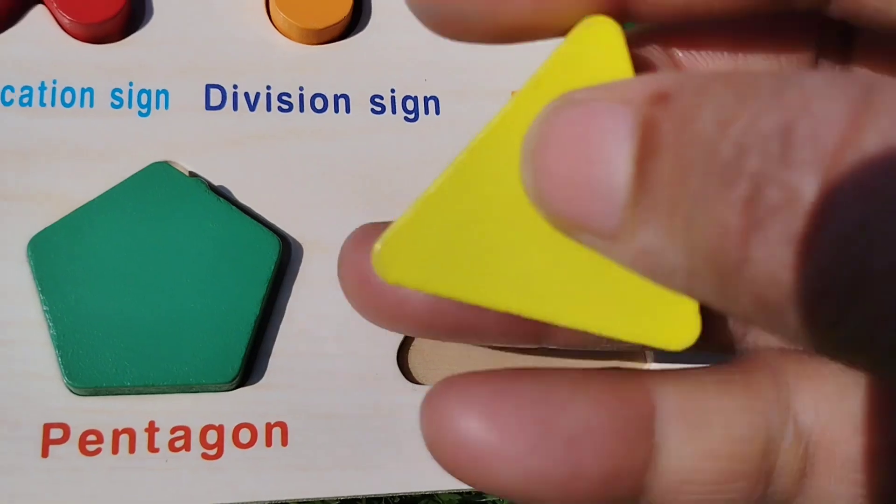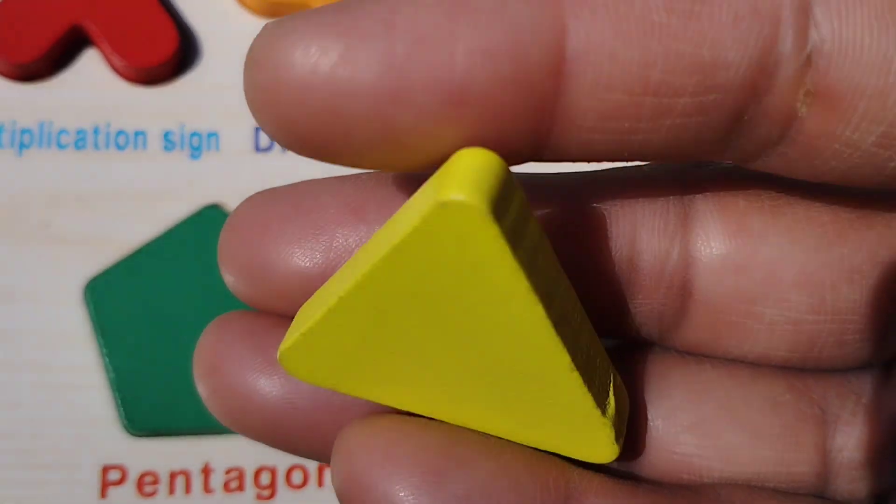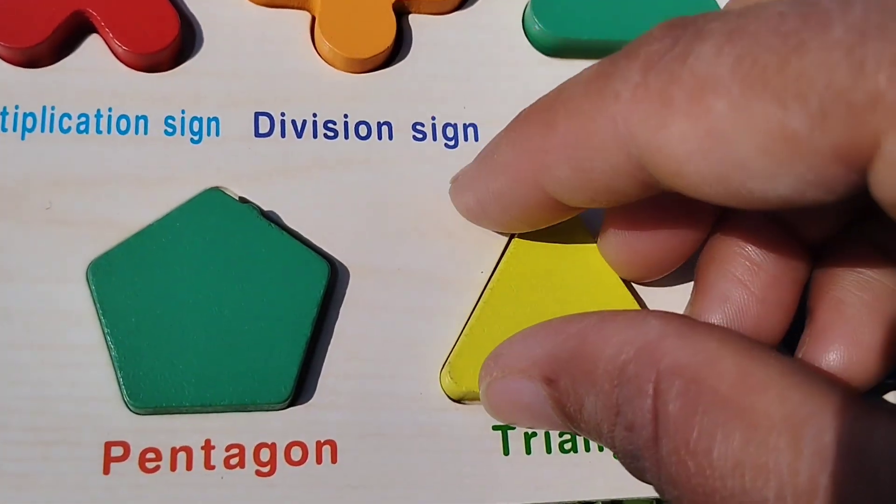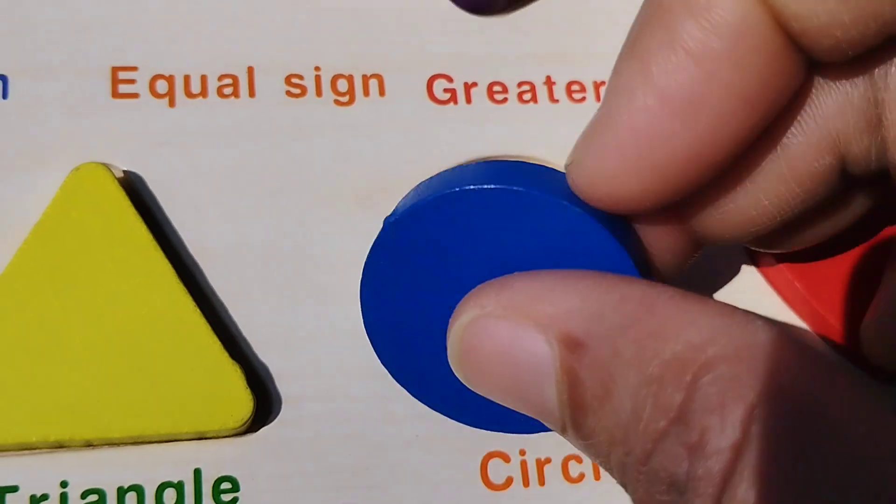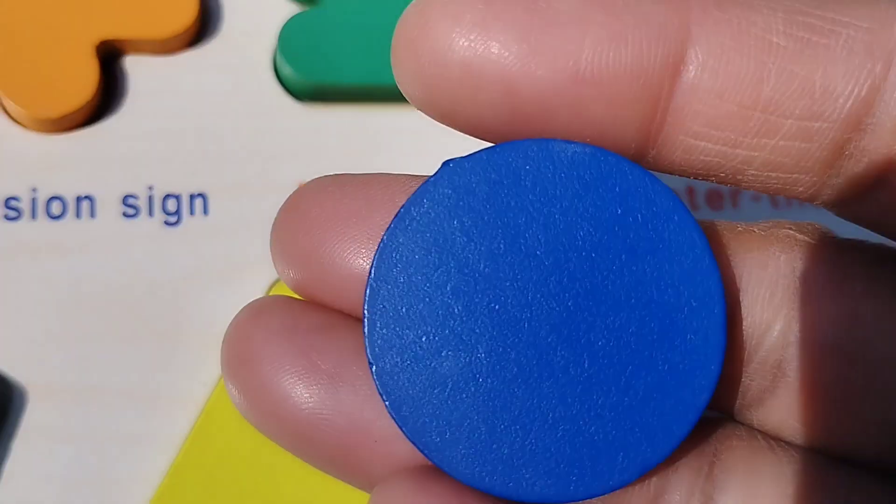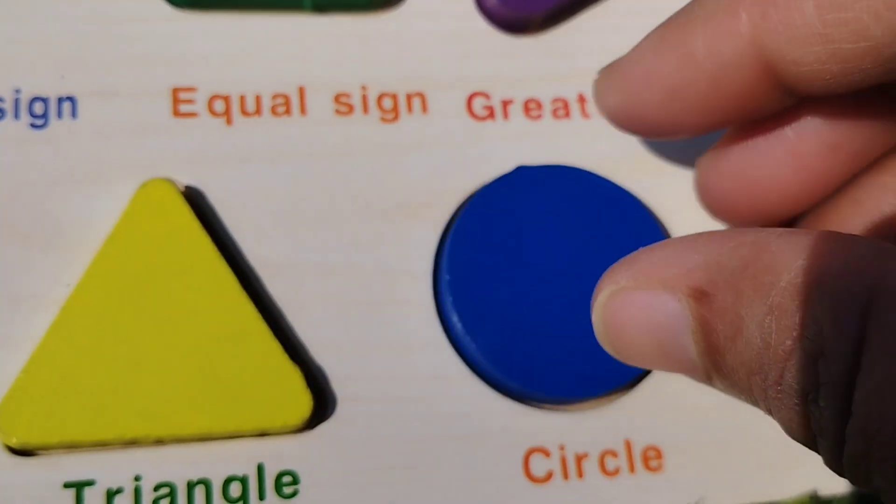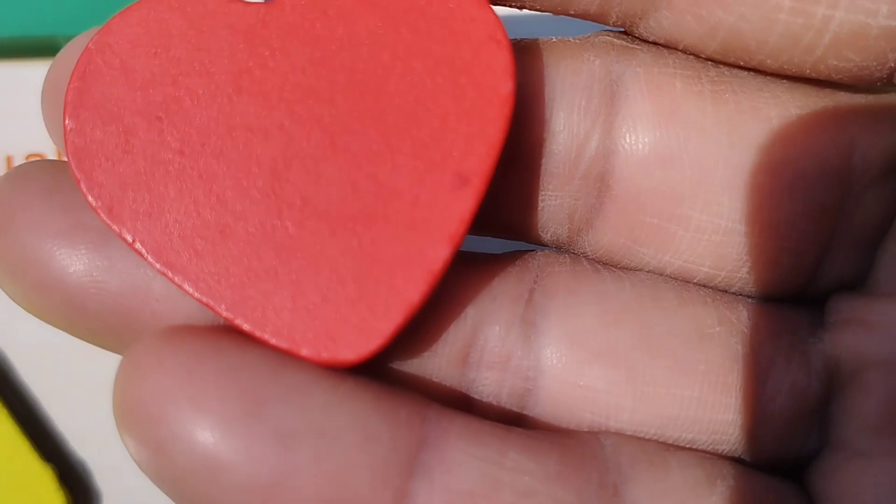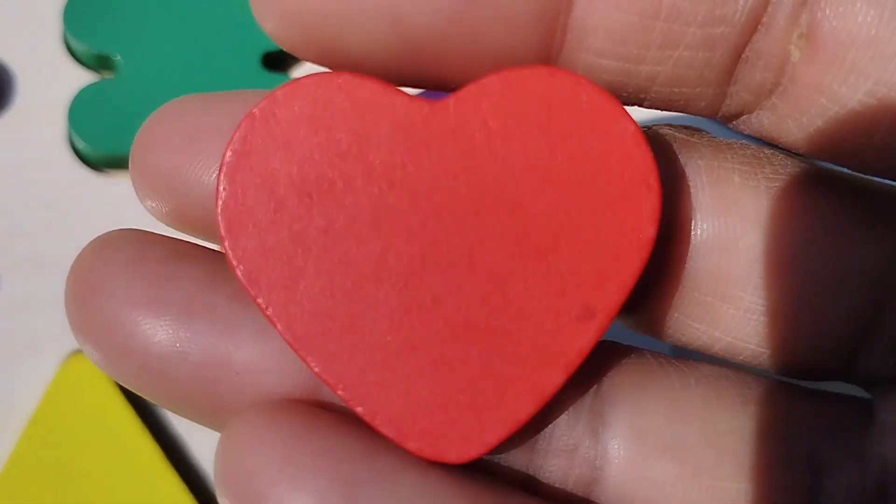The next shape is triangle. Triangle. Circle. This is circle shape. Heart. This is heart shape.